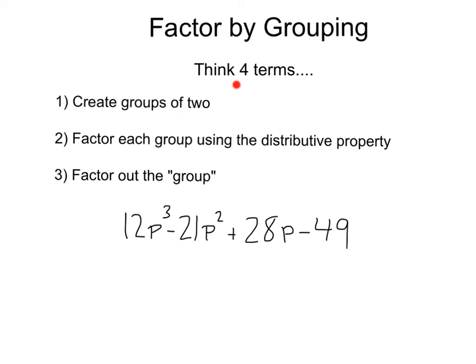To factor by grouping, you want to think four terms. When you have four terms like so: one, two, three, four, you're probably going to have to group. There are three steps to grouping to be successful.